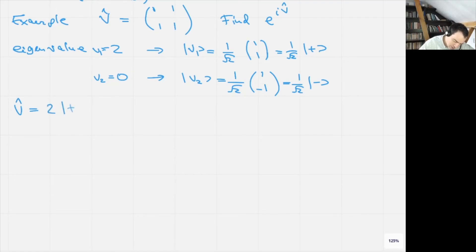V-hat is equal to 2 times |+⟩⟨+|. So indeed, this matrix can be obtained by multiplying this column by the same row. The factor of 2 comes to compensate this one over square root of 2.